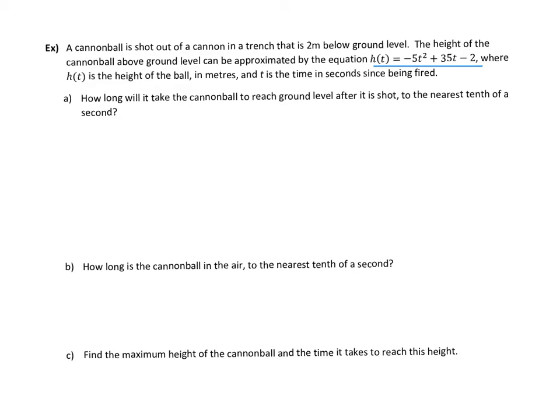How long will it take the cannonball to reach the ground level? So the how long is what we're trying to figure out. That tells us t is what we're solving for, t equals question mark. And reaching ground level means your height is zero. So let's work that in. We've got to change our h at t equaling zero. And that still equals negative 5t squared plus 35t minus 2. So we need to solve this quadratic equation for t. It's in its standard form. We could try factoring or we can go into quadratic formula. So let's go with quadratic formula.